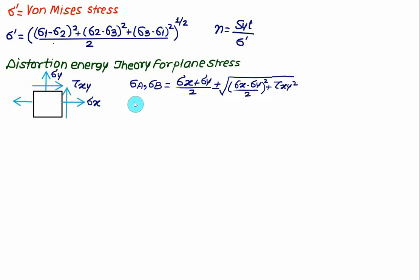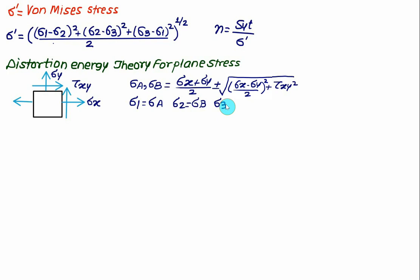The plane stress can be converted into three-dimensional stress. In that case we have two principal stresses sigma_a and sigma_b. We assign sigma_1 = sigma_a, sigma_2 = sigma_b, and the third principal stress sigma_3 = 0. Using this, we can calculate the von Mises stress.